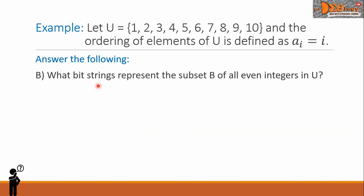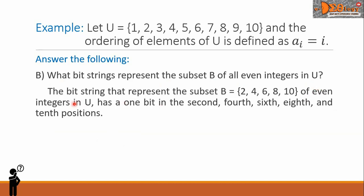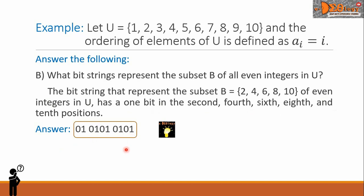Letter B: what bit strings represent the subset B of all even integers in U? The bit string that represents the subset B with elements 2, 4, 6, 8, and 10 of even integers in U has a 1 bit in the 2nd, 4th, 6th, 8th, and 10th positions. So the answer is: 0 1 0 1 0 1 0 1 0 1. This is the final answer.